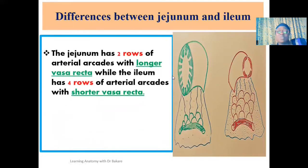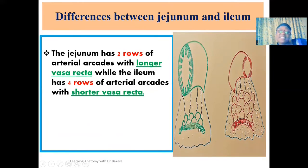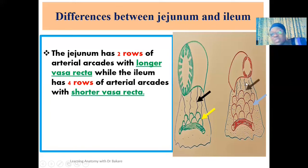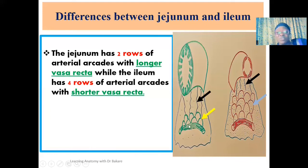Another difference is the number of rows of arterial arcades. The jejunum has about two rows of arterial arcades, while the ileum has about four rows. In the jejunum, the final terminal straight vessels — the vasa recta — that emerge after the arterial arcades tend to be longer. In the ileum, because of more arterial arcades, the vasa recta are shorter. This pattern of anastomosis in the mesentery can also be used to differentiate the jejunum from the ileum.